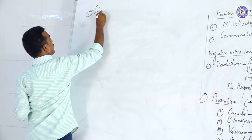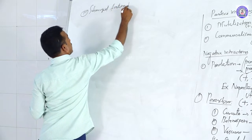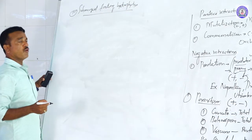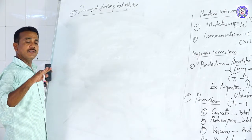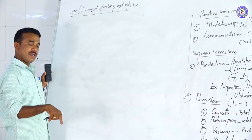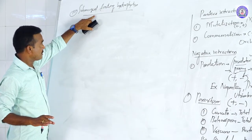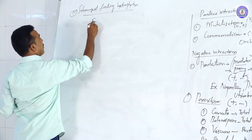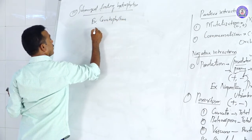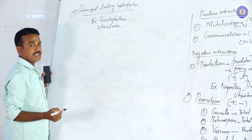Third type: submerged floating hydrophytes. These are plants whose whole body is immersed in water bodies, not in contact with soil or the earth. Examples include Myriophyllum and Utricularia.